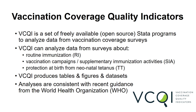VIKI analyzes data from three types of surveys: those that document routine immunization, those that document coverage in vaccination campaigns — also known as supplementary immunization activities — and those that document the proportion of newborns who were protected at birth from neonatal tetanus.